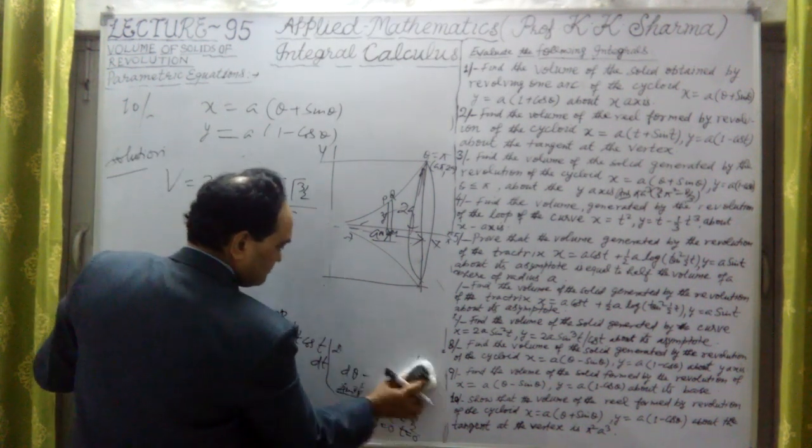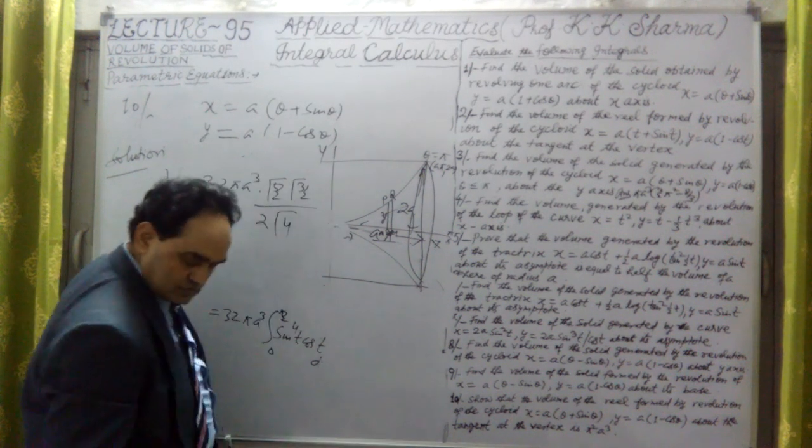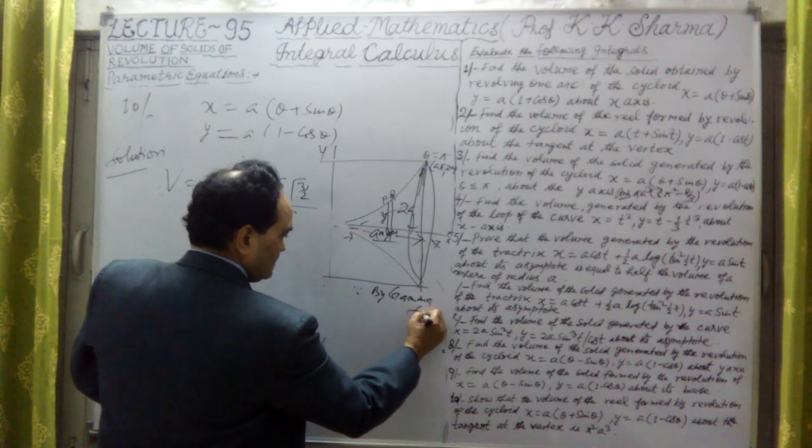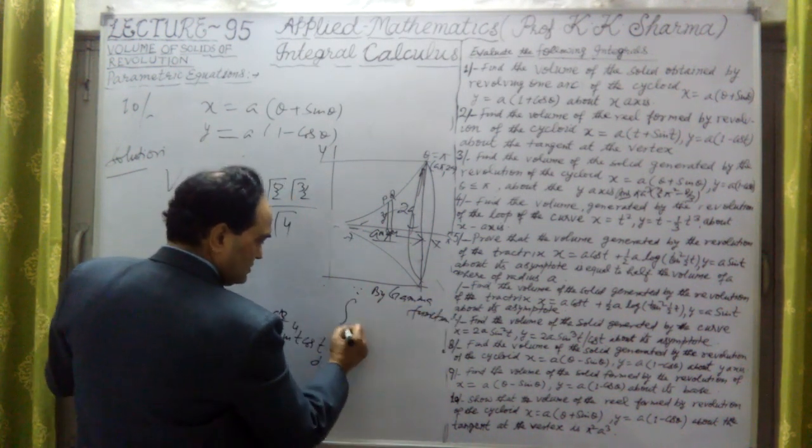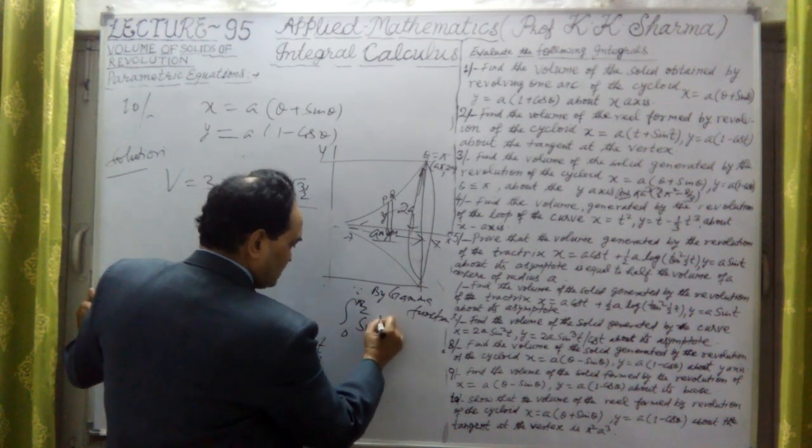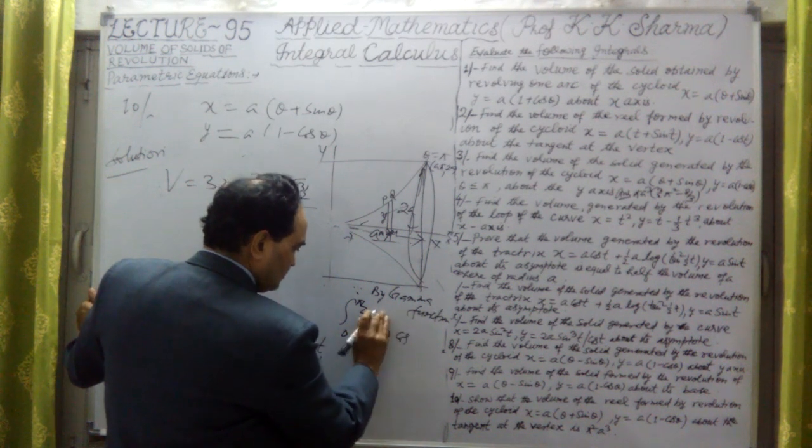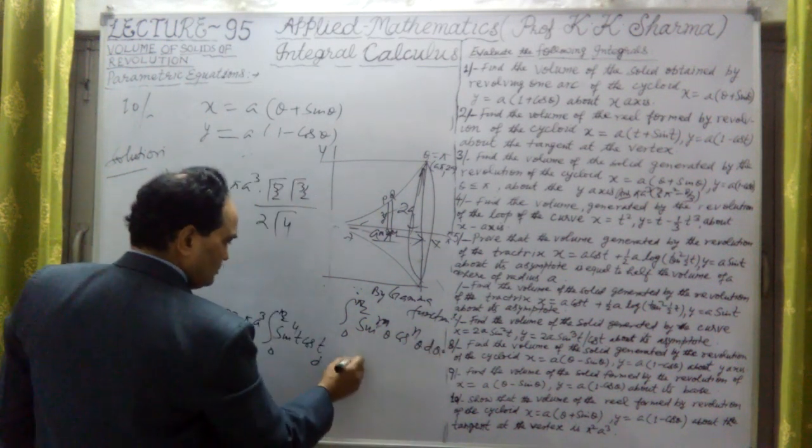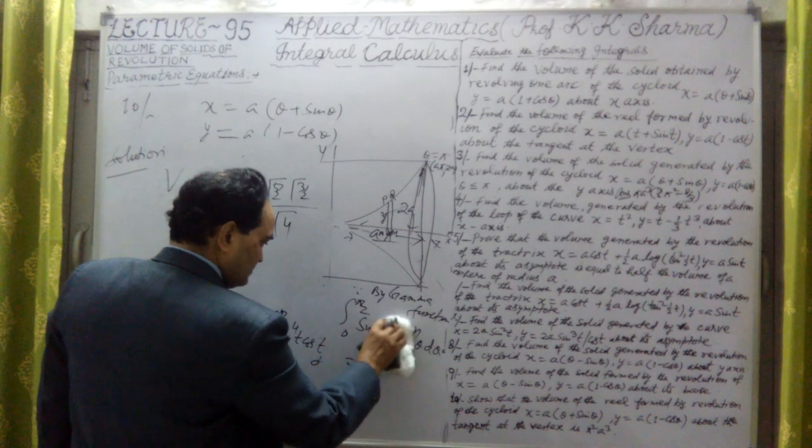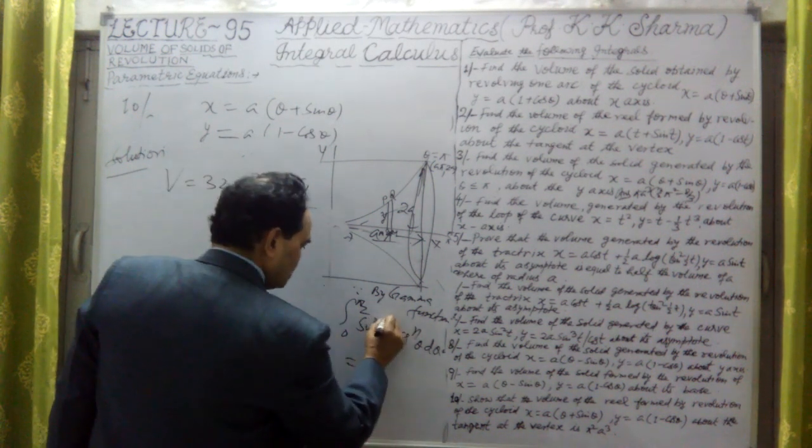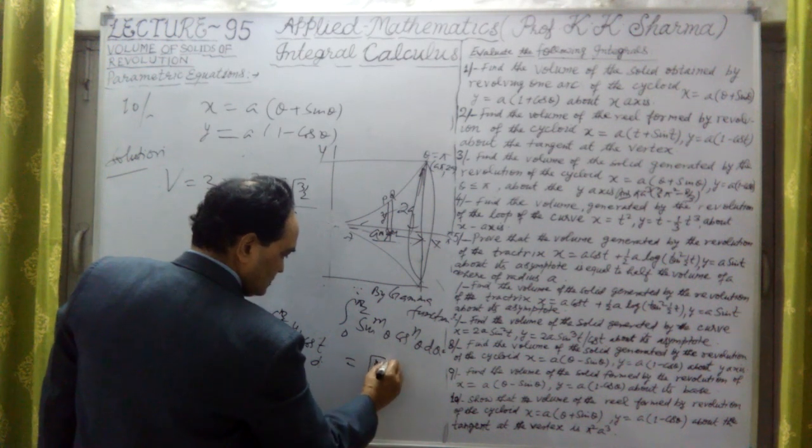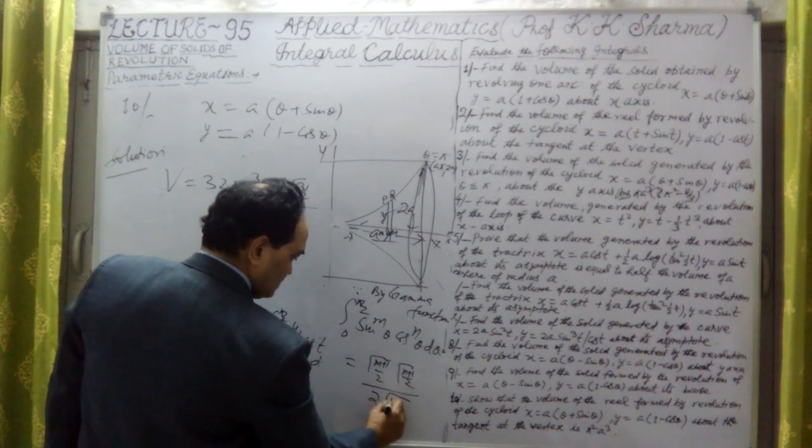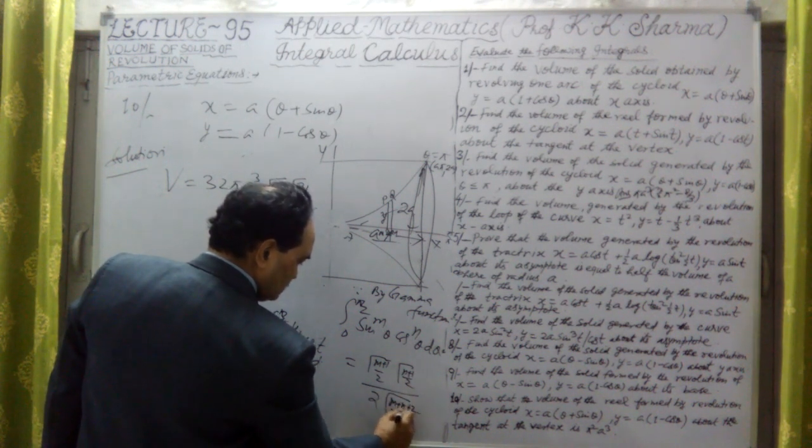Since by gamma function we know that the limit 0 to pi by 2, if it is sine power m theta cos power n theta d theta, then the value will come out as gamma (m+1)/2 gamma (n+1)/2 divided by 2 gamma (m+n+2)/2. This is the formula.